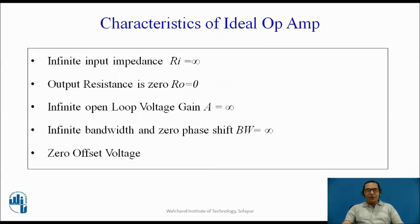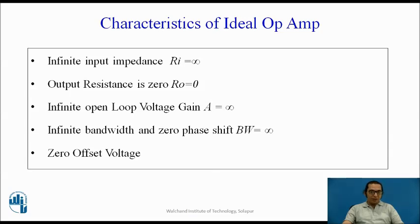What are the characteristics of an ideal Op-Amp? First, it has infinite input impedance or resistance, so Ri is equal to infinity. It has zero output resistance, R0 equal to 0. It has infinite open loop voltage gain, A equal to infinity. It has infinite bandwidth, meaning it can amplify all frequency signals with the same voltage gain, zero phase shift, meaning output and input signals are in phase, and zero offset voltage.